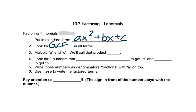Then we multiply a times c. We'll call that product d just for a minute. We'll look for two numbers that multiply to get d and add to get b. We'll write those numbers as denominators of fractions with a on top, and then we'll reduce and use these reduced fractions to write our factored terms.